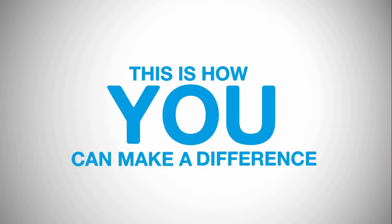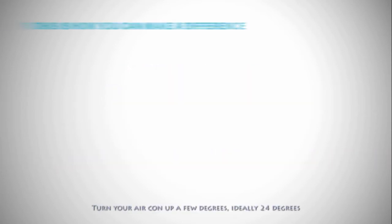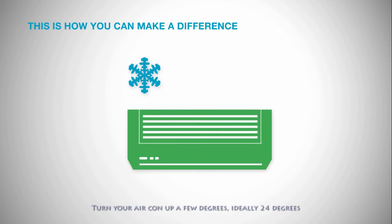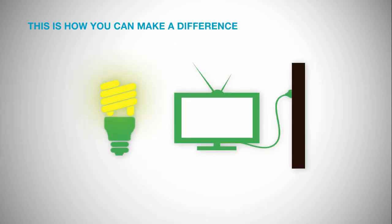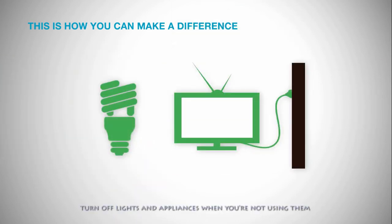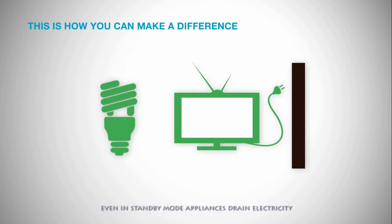This is how you can make a difference. Turn up your aircon a few degrees — ideally 24 degrees — because the colder it is, the more electricity it uses. Turn off the lights and appliances when you're not using them, even in standby mode.